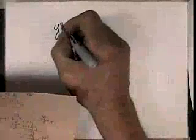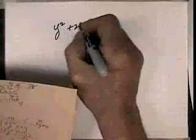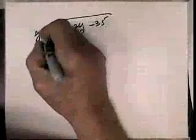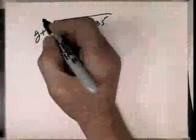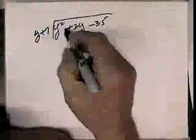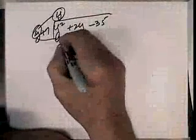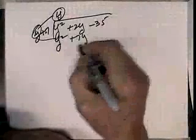Next, we have y squared plus 2y minus 35, divided by y plus 7. Y goes into y squared y times. Y times y must be the y squared exactly.